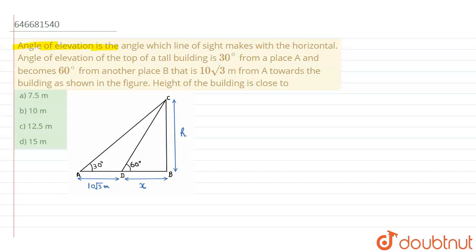So the question is: angle of elevation is the angle which line of sight makes with horizontal. Angle of elevation of the top of a tall building is 30 degrees from a place A and becomes 60 degrees from another place B that is 10 root 3 meters from A towards the building as shown in the figure. Height of building is close to...